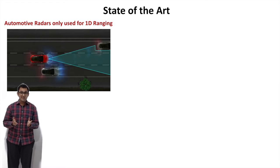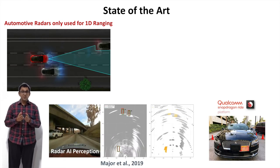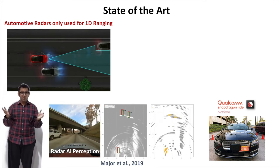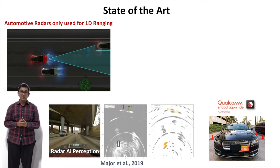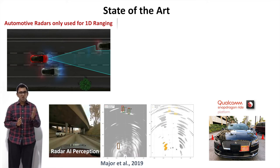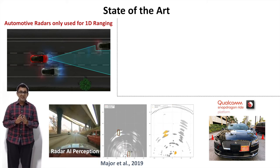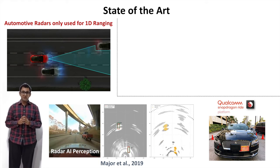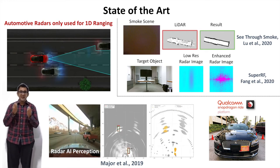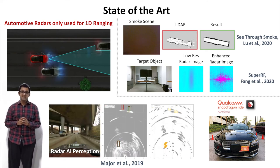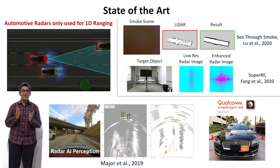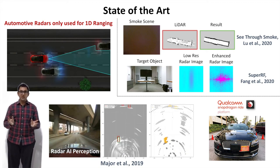Of course, there is more recent work — some from here at Qualcomm itself — that is able to extend this to a 2D horizontal plane using the Snapdragon module. There is also research in academia that tries to do millimeter wave imaging, but we are still way behind from achieving anything that gives enough contextual information about the scene. So the question is: why isn't millimeter wave imaging good enough today?